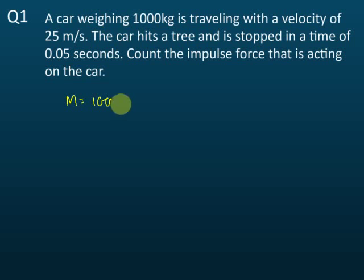...is equal to 1000 kg and it is moving with a velocity - this is the initial velocity - and u equals 25 meters per second. The car hits a tree and stops in a time of...